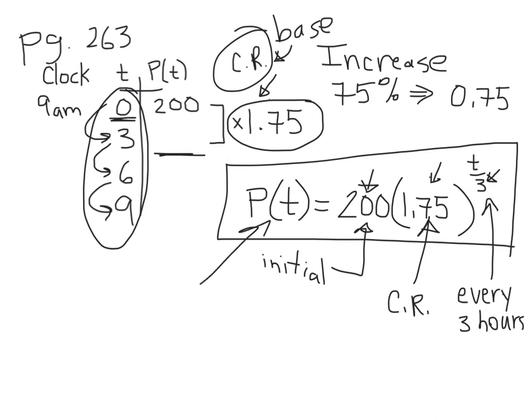Explaining each part: 200 is the initial population. The common ratio is 1.75 because there is a growth — we add 75% to 1. This growth is happening every three hours, so the exponent is t over 3. This is population as a function of time, where t is the time in hours.